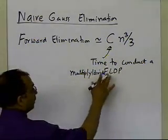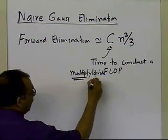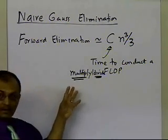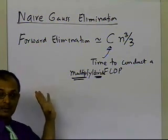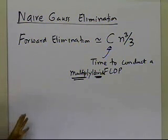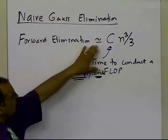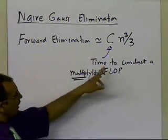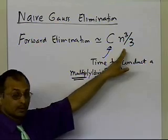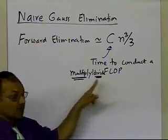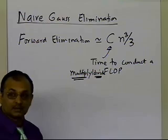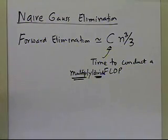There are certain assumptions involved here: we are assuming that multiply and divide floating point operations take the same amount of time, which is not actually true. We are also neglecting the floating point operations for addition and subtraction, although those take a little less time. That's why I put the word 'approximately' here — this is not exactly the number of floating point operations in the forward elimination part of Gaussian elimination; it only counts multiply and divide operations.